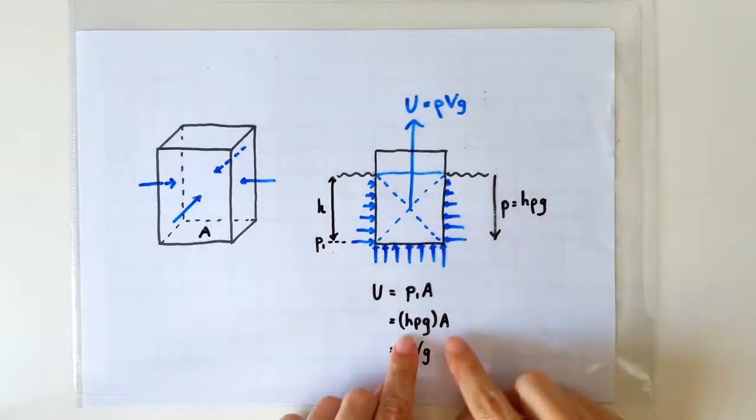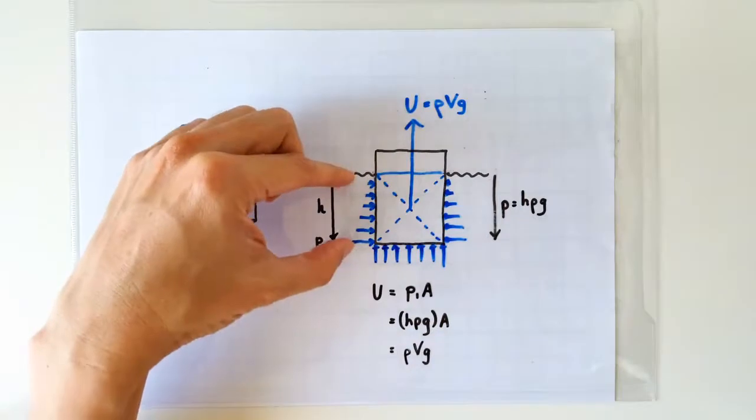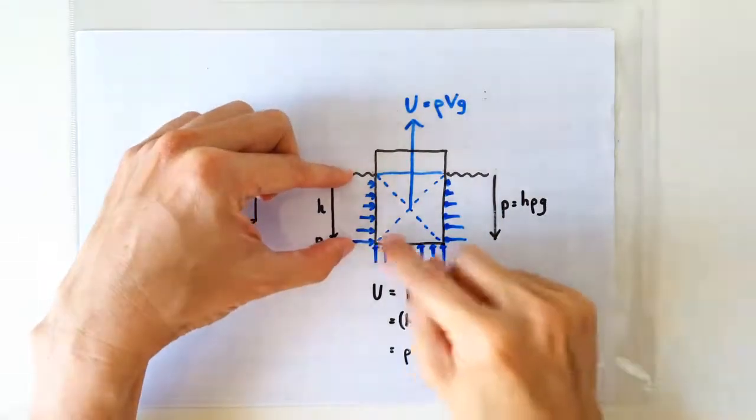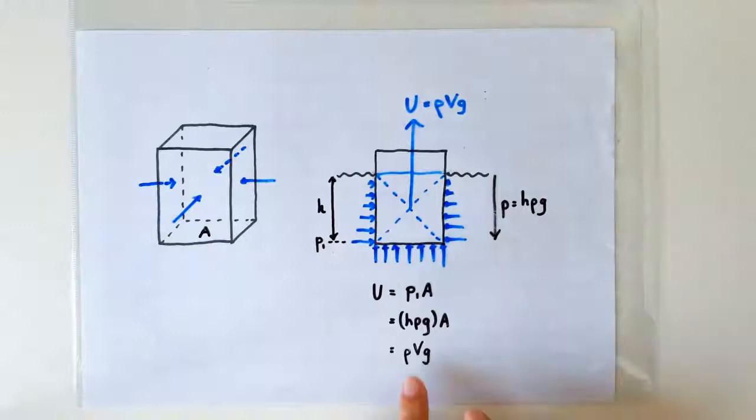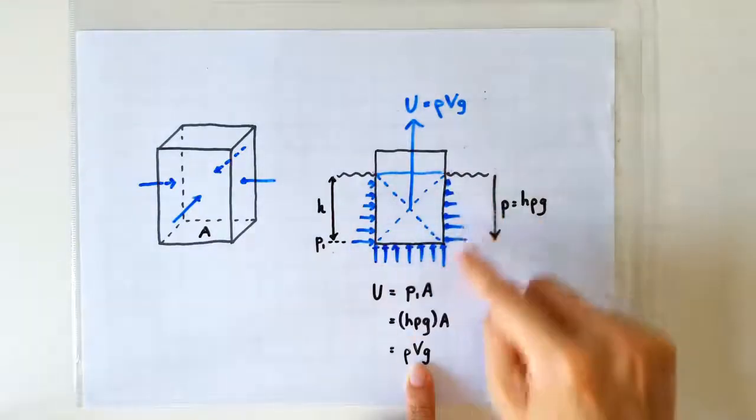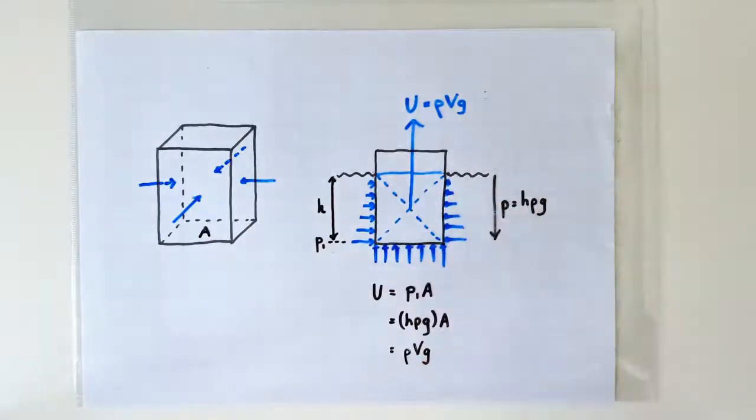Next, we note that h times A, which is this h times the cross-sectional area A, gives us this volume, which is the volume of the water displaced. So we have derived the formula: uptrust is ρVg, the weight of the fluid displaced.